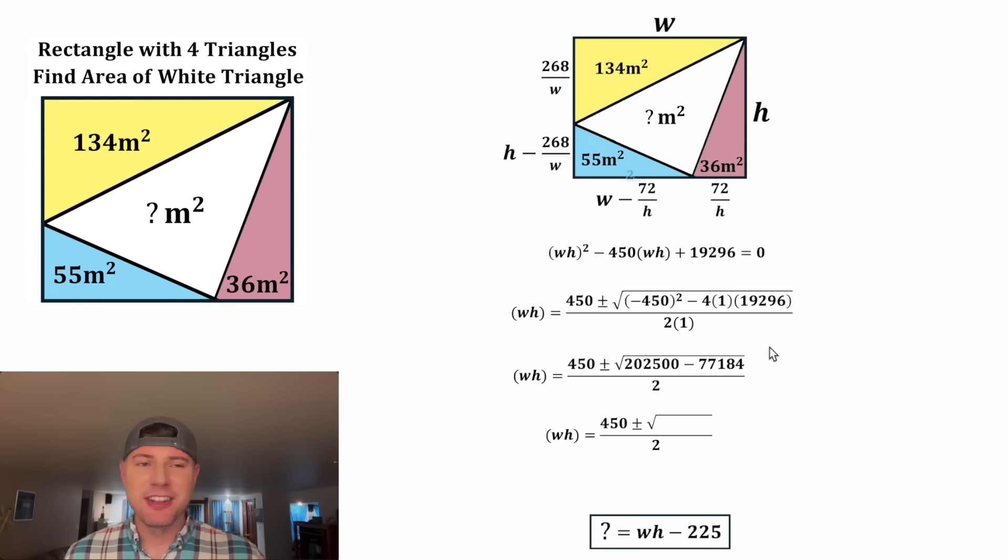From here, inside of the square root, this minus this equals 125,316. And this is a perfect square. The square root of this is 354. So we end up with 450 over 2 plus or minus 354 over 2. And that's the same thing as 225 plus or minus 177.